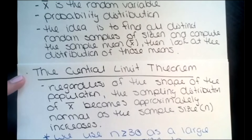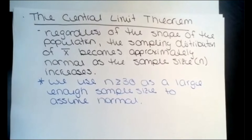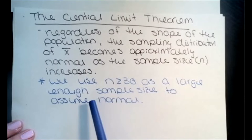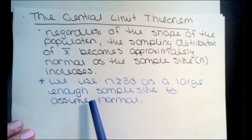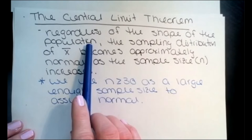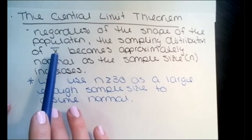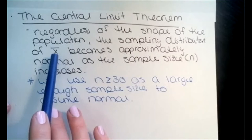In our class, we use n greater than or equal to 30 as a large enough sample size to assume normality. So it's just a quick visual: you look at your sample size n from the problem, and if n is greater than or equal to 30, then we can assume the sampling distribution is normally distributed. It does not matter the shape of the population — skewed right, skewed left, symmetric, or even uniform. As long as the sample size is large enough, the sampling distribution will be symmetric.